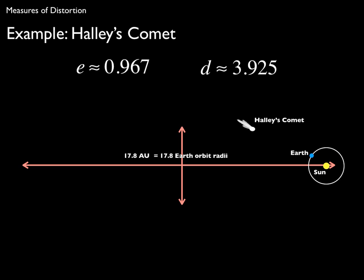And the dilatation is about 3.925, which means you could cut that distance 17.8 down by about a factor of 4, and that'll give you the semi-minor axis. So Halley's Comet's fairly well distorted.